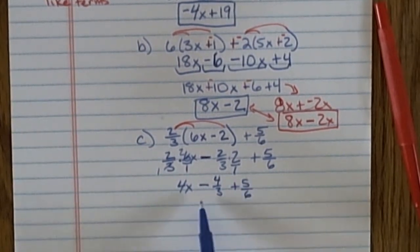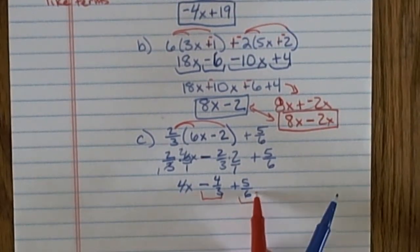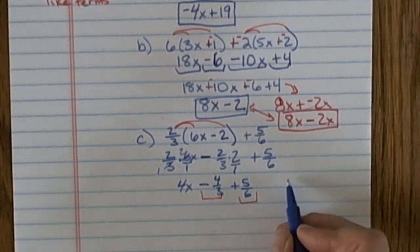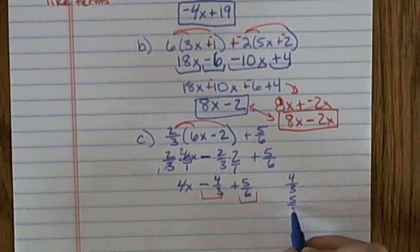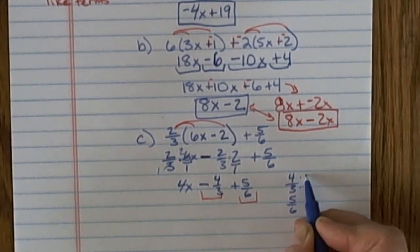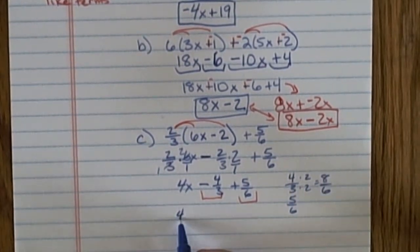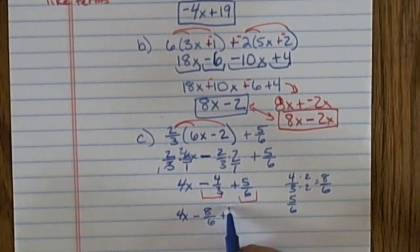Now I look for like terms, and there are. The constants or numbers are my like terms. To add fractions, I need a common denominator. I can think about that: 4/3 and 5/6. The common denominator is 6. So I multiply 4/3 by 2/2, and I get 8/6. So I have 4x minus 8/6 plus 5/6.